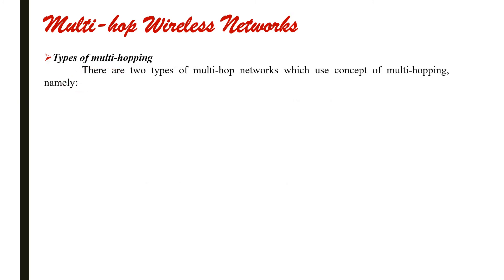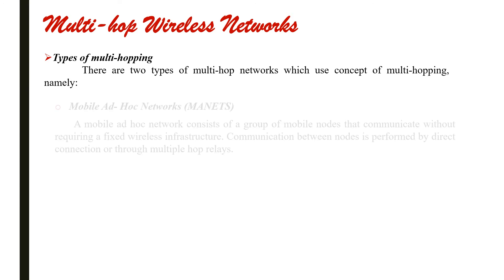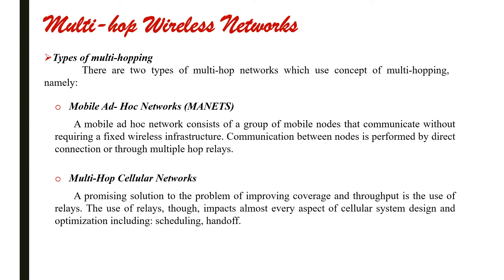The two types of Multi-Hop networks which use the concept of multi-hopping are the Mobile Ad-Hoc Networks and the Multi-Hop Cellular Networks. The Mobile Ad-Hoc Network consists of a group of mobile nodes that communicate without requiring a fixed wireless infrastructure. On the other hand, the Multi-Hop Cellular Networks provide a promising solution to the problem of improving coverage and throughput.